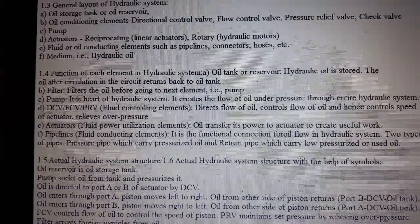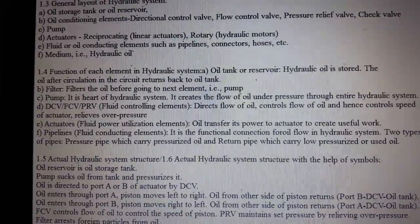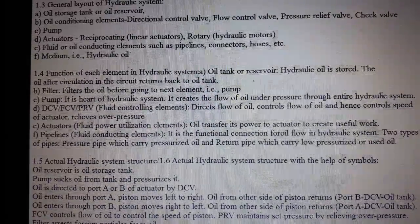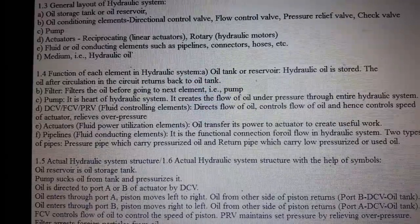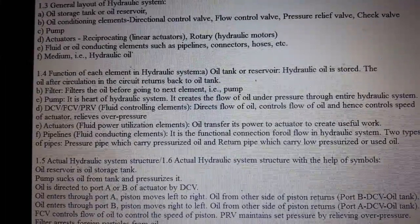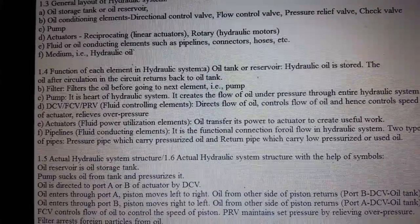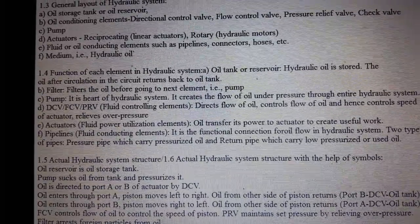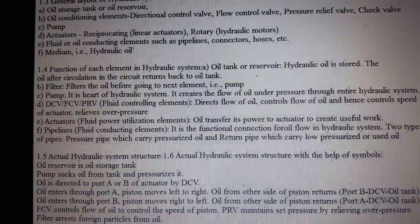Pump: it is the heart of the hydraulic system. It creates the flow of oil under pressure through the entire hydraulic system. DCV, FCV, and PRV are the fluid controlling elements. They direct the flow of oil, control the flow of oil and hence control the speed of the actuator, and relieve overpressure.